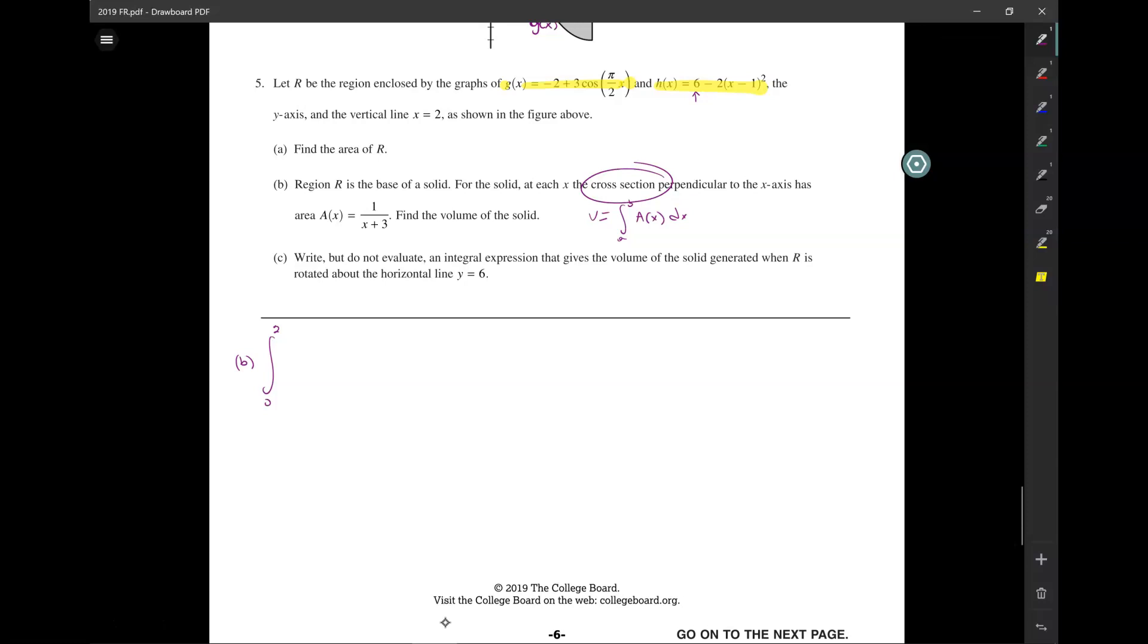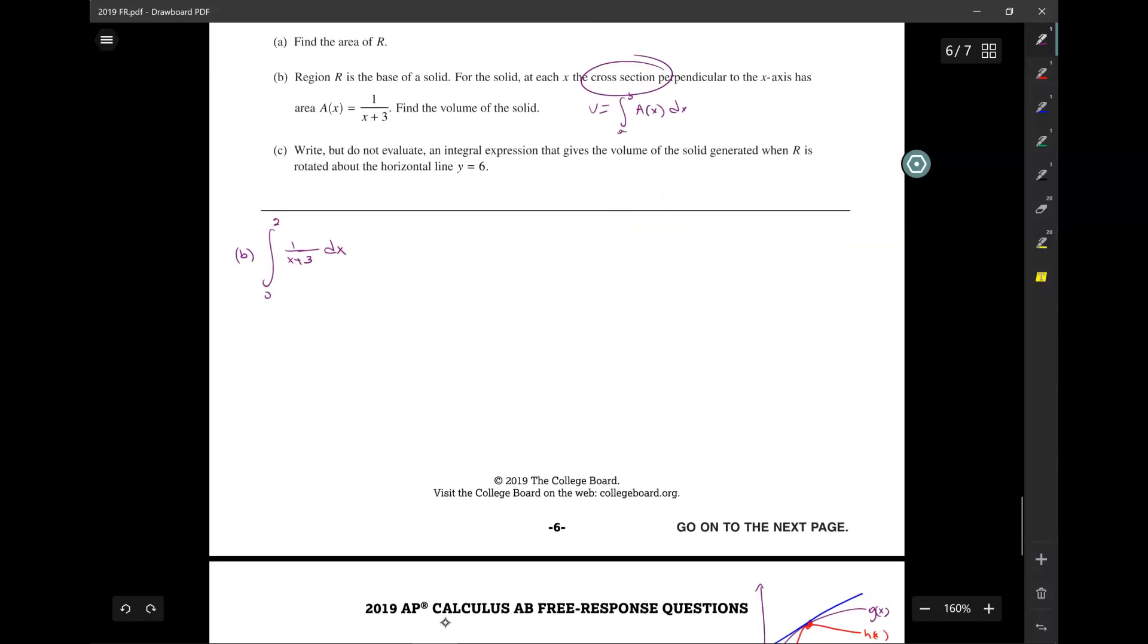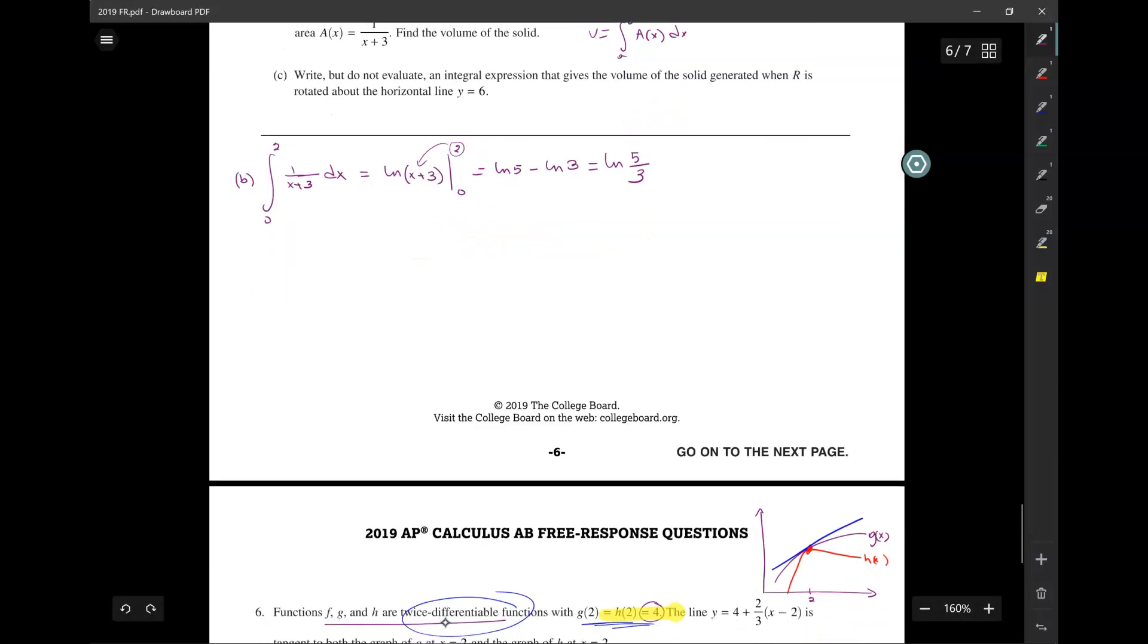And normally, we would have to find a, because it'll tell us the cross-section is a square or a semicircle, and we had to find a. But here, they gave us the a. It's 1 over x plus 3 dx. So I just integrate that. The integral of 1 over u is ln of u. So this will be ln of x plus 3 from 0 to 2. So that's ln of, when you plug in the 2, 5 minus ln of 3. You can either leave it like that, or you can do ln of 5 over 3.